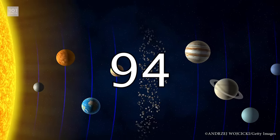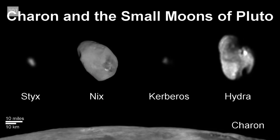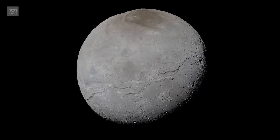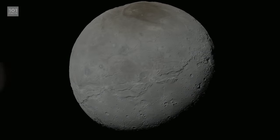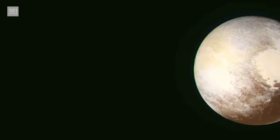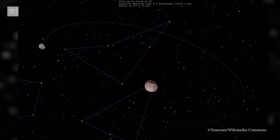Pluto, which is smaller than Earth's moon, has five moons of its own. One of these is called Charon, and it's so big it actually makes Pluto and its other four moons wobble unpredictably. This is because the center of gravity isn't at the center of Pluto like other planets, it's actually in the space between Pluto and Charon.